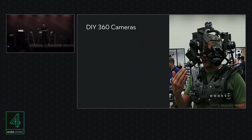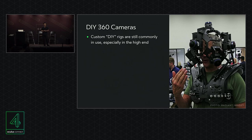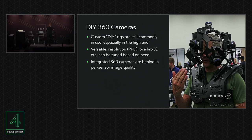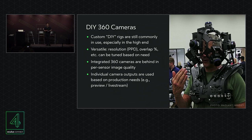There are also DIY cameras — custom rigs still very commonly in use, especially at the high end. What's great about DIY cameras is that they're extremely versatile: they can essentially be configured to target a specific resolution, overlap percentage, dynamic range, and whatever shooting scenario you're targeting. Integrated 360 cameras are often behind in image quality per sensor, whereas in a DIY camera you can choose the sensors and lenses for your needs. The individual camera outputs can also be used flexibly based on production needs, such as configuring a particular kind of preview or live stream on set.